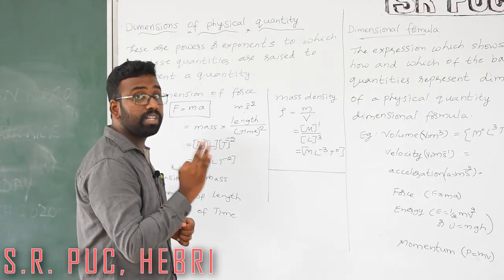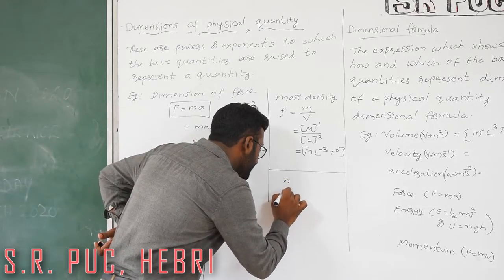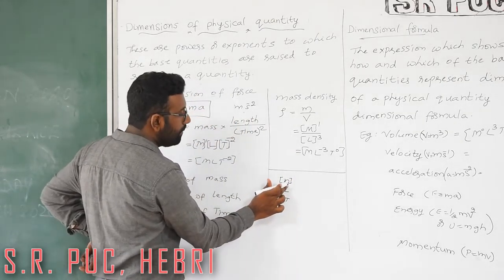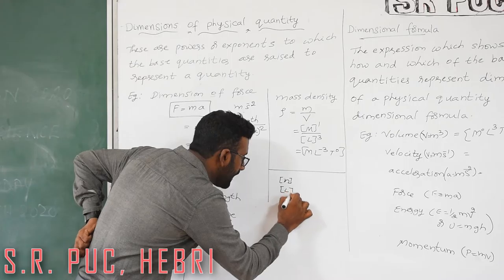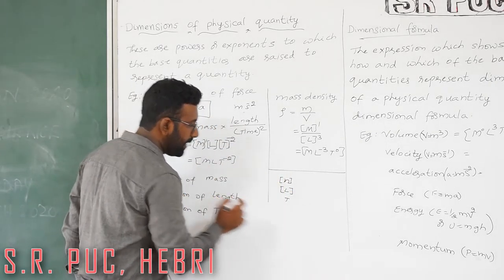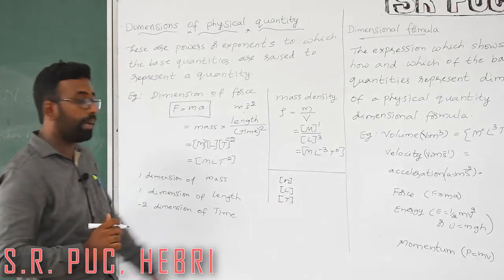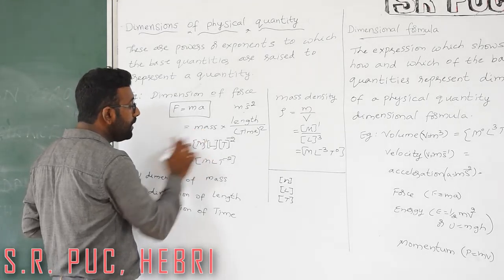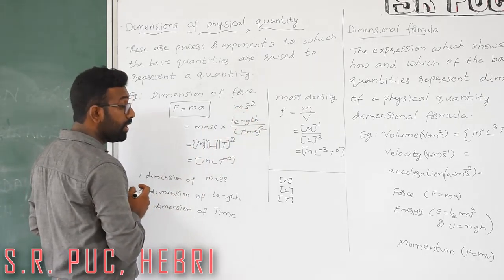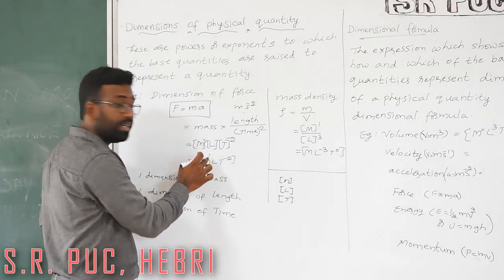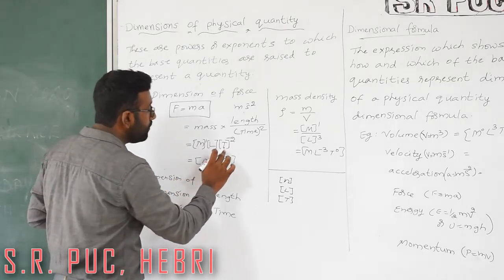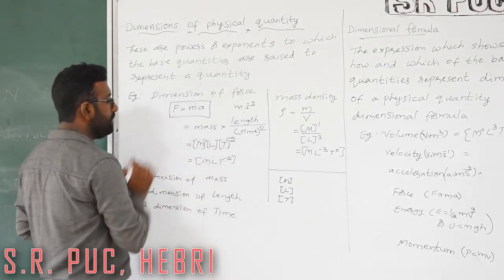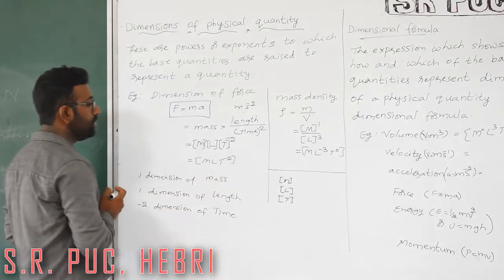Basically there are three fundamental quantities: mass, length, and time. Mass is represented by capital M, length by capital L (with square brackets), and time by capital T. So for force we write M to the power 1, L to the power 1 (numerator), and T to the power minus 2 (denominator). So the dimensional formula is M L T⁻².